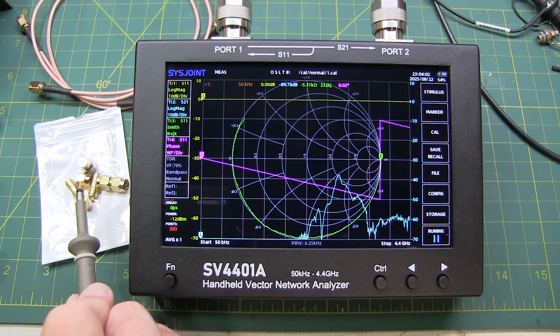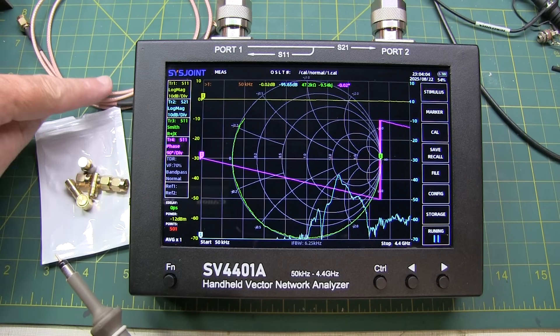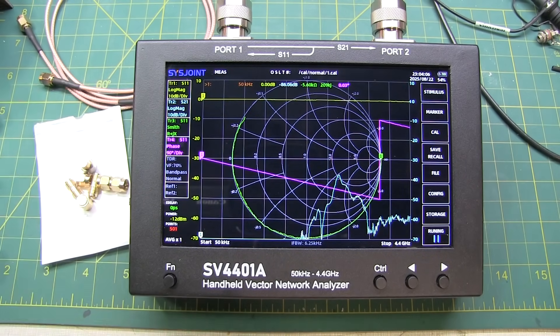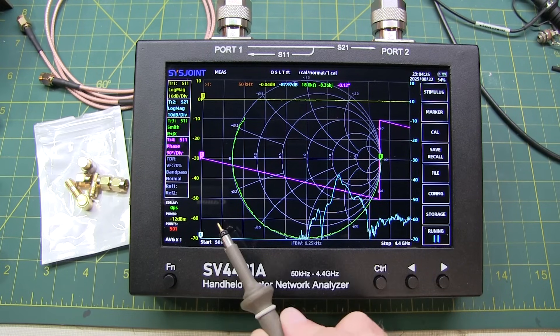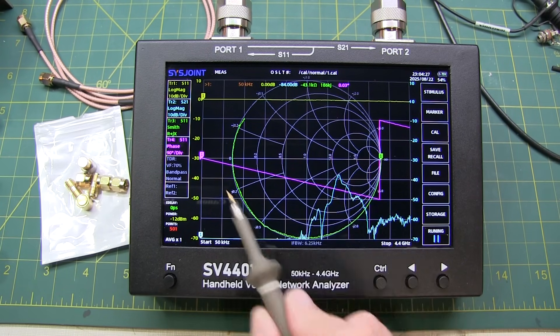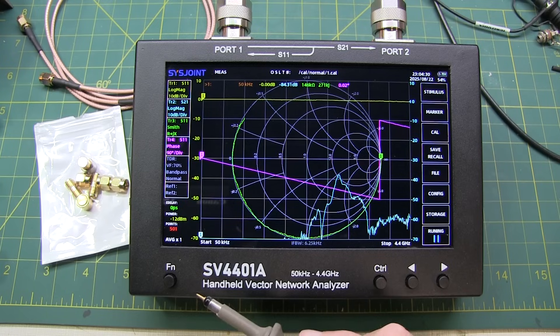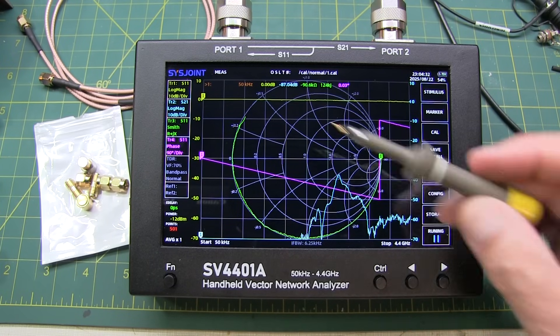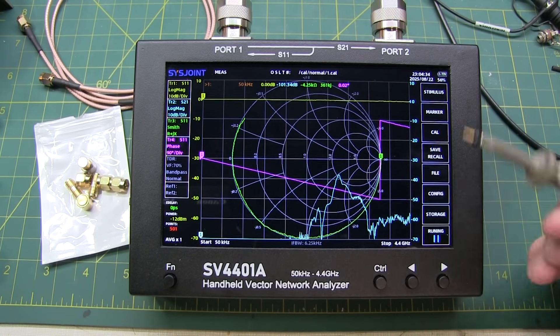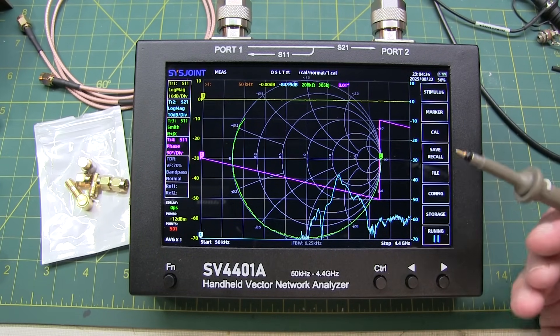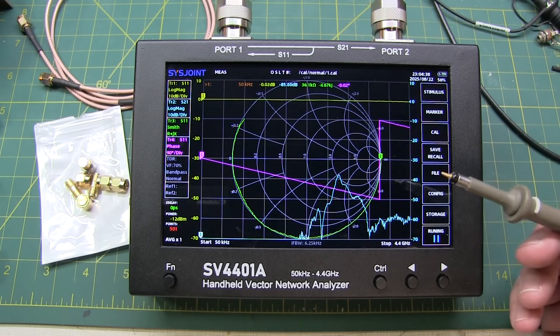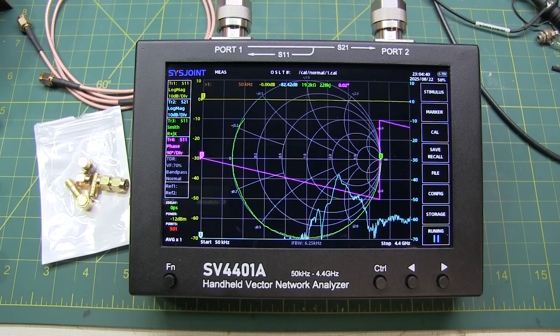Now the larger screen not only gives you a larger number of points and better readability and visibility of the traces, it also allows menus to stay on the screen instead of getting hidden. And that makes the menu structure and the use of this instrument actually easier than some of the very small Nano VNAs.